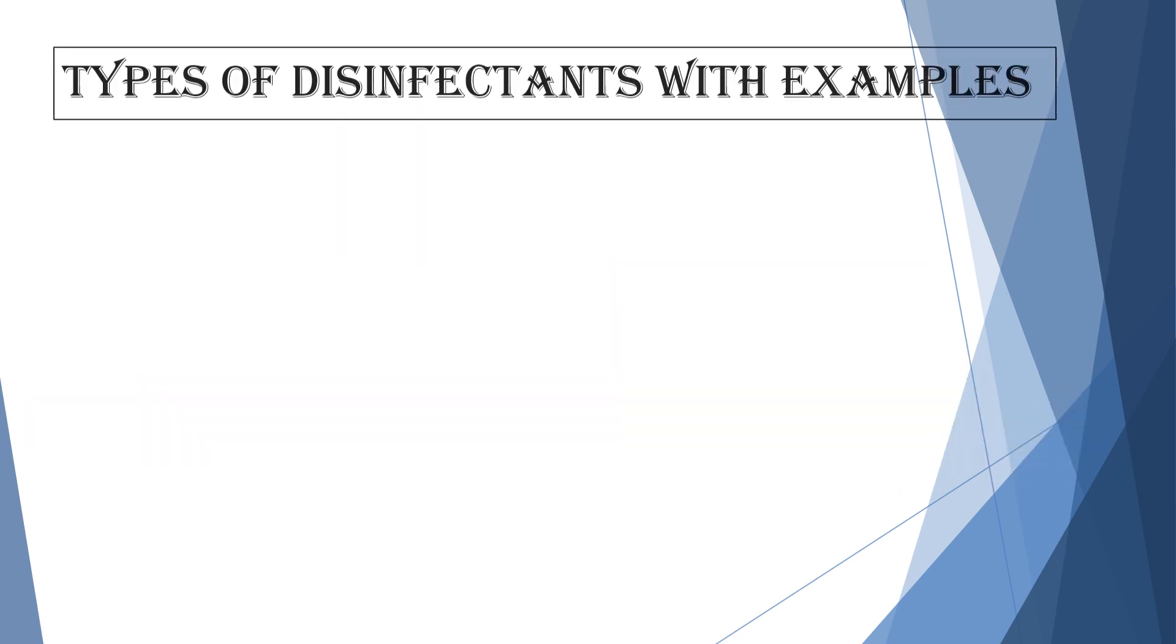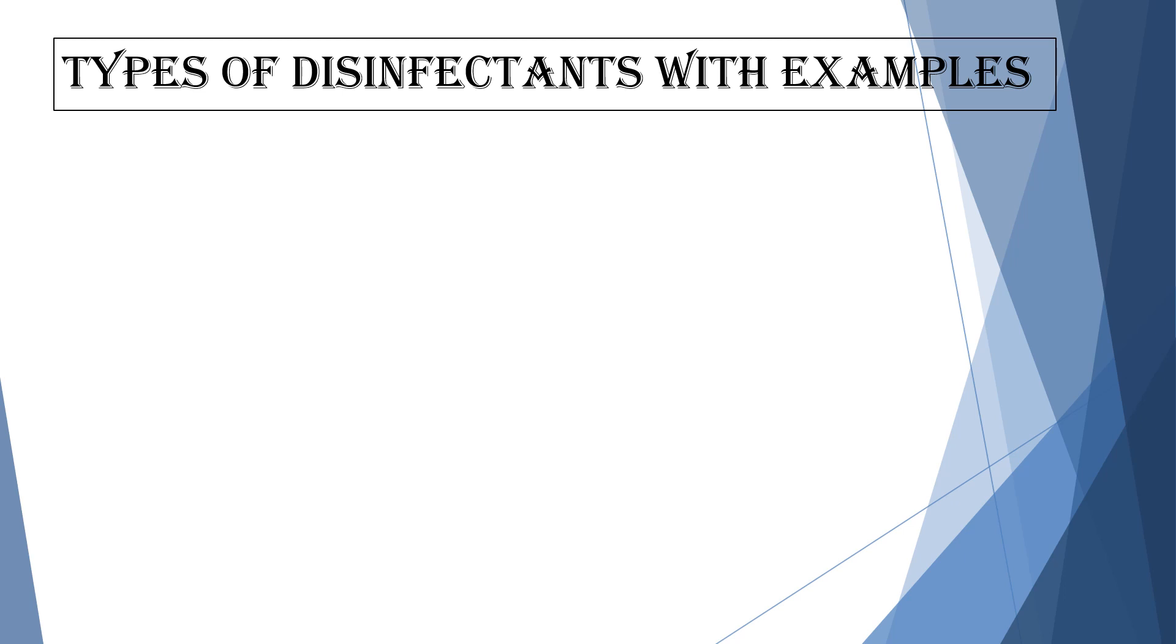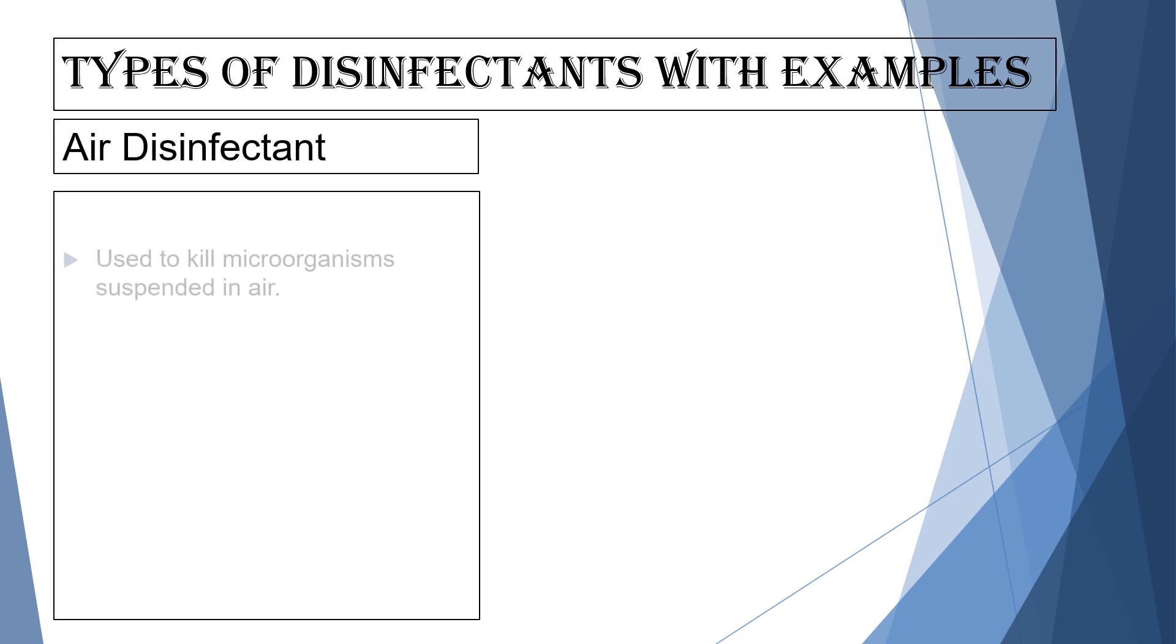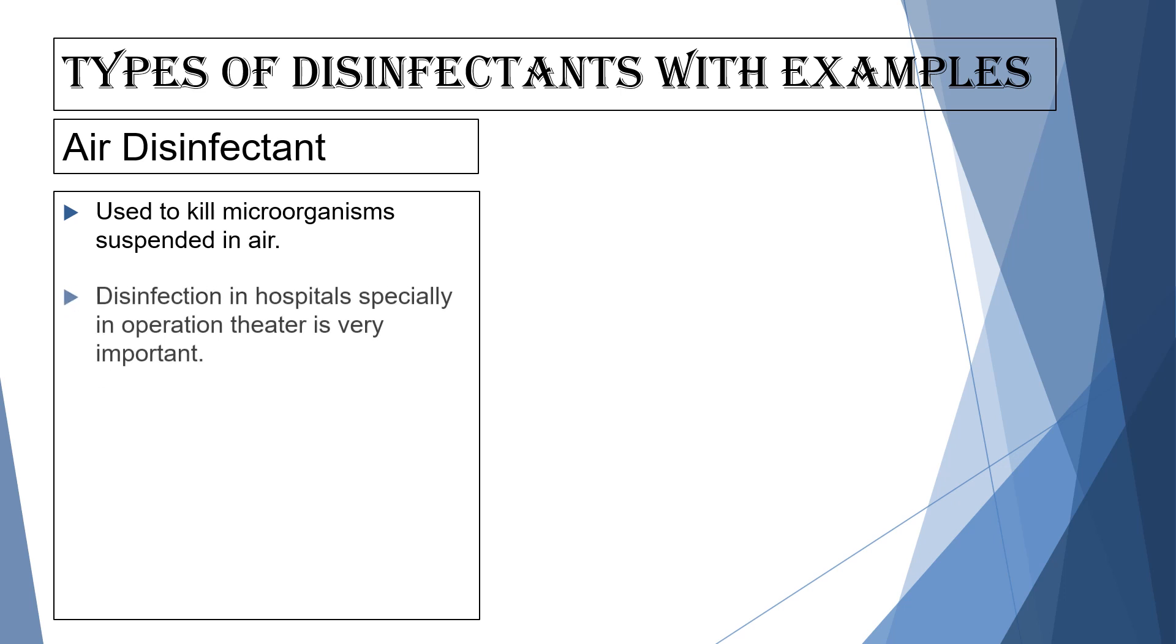Let's see types of disinfectants in detail. The first one is air disinfectant. Air disinfectant is used to kill microorganisms that are suspended in air. Disinfection in hospitals, especially in operation theaters is very important.